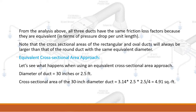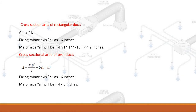Equivalent cross-sectional area approach. Using a 30-inch diameter duct (2.5 feet), the cross-sectional area equals π × 2.5² / 4 = 4.91 square feet. Fixing the minor axis B at 16 inches, the major axis A for the rectangular duct equals 4.91 × 144 / 16 = 44.2 inches. For the oval duct with minor axis B at 16 inches, the major axis A equals 47.6 inches.